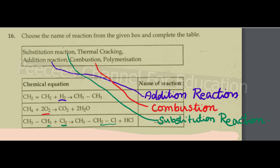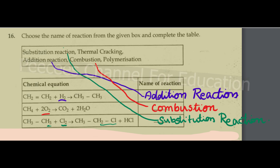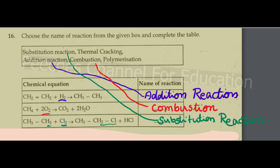CH₂=CH₂ plus H₂ gives CH₃-CH₃ single bond. H₂ is added, so we can see H₂ is added — that is an addition reaction.